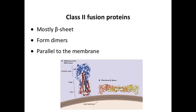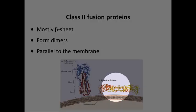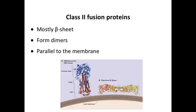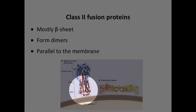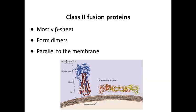They're class 2, which are very different. You can see them here. These are mostly beta sheets. You see there's very little alpha helices in these type 2 fusion proteins. They form dimers typically instead of trimers, and they're parallel to the membrane. So in contrast to the influenza HA and the other type 1 fusion proteins, the type 2 are parallel to the membrane.